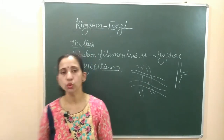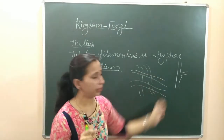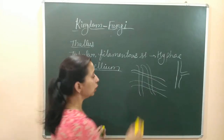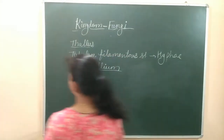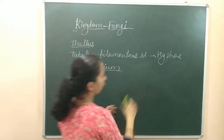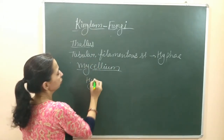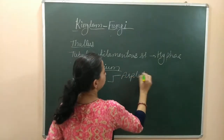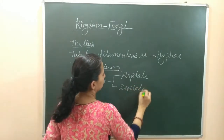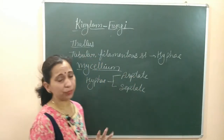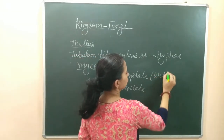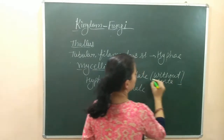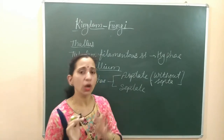These hyphae, these tubular filaments, can be formed in two ways. The first one is aseptate, and the other is septate. The word septum means a partition. So aseptate means without a septum — there is no partition between the filaments. These are the hyphae found without any septum.